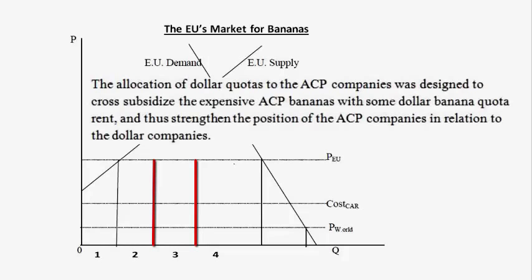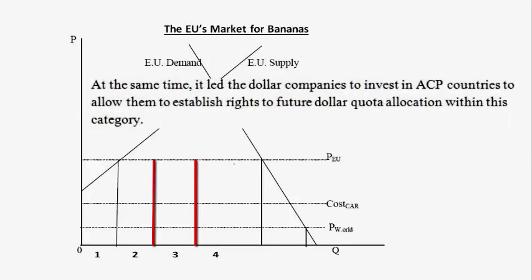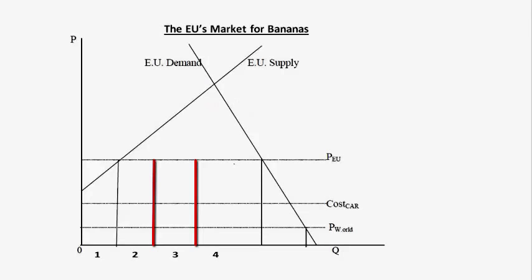The allocation of dollar quotas to ACP companies was designed to cross-subsidize their expensive bananas and strengthen their position relative to dollar companies. At the same time, it led dollar companies to invest in ACP countries to establish rights to future dollar quota allocation within this category. So we are saying this led Chiquita, Dole, Del Monte, etc. to invest in ACP countries, and this would only make sense if access was duty-free.